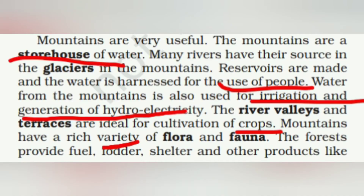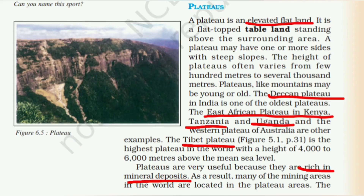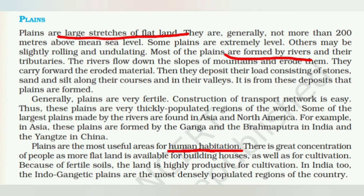Benefits of mountains include: serving as a storehouse of water through glaciers used for irrigation, generating hydroelectric power, providing river valleys for crops, supporting rich flora and fauna, promoting tourism, and enabling sports. Plateaus are elevated flat-topped tablelands. The oldest plateau in India is the Deccan Plateau. The East African Plateau is in Kenya, Tanzania, and Uganda. The highest is the Tibetan Plateau. Plateaus are rich in mineral deposits — iron, manganese, coal — and examples include Chota Nagpur. Waterfalls like Hundru Falls and Jog Falls in Karnataka are associated with plateaus. Lava plateaus have fertile black soil good for cultivation.